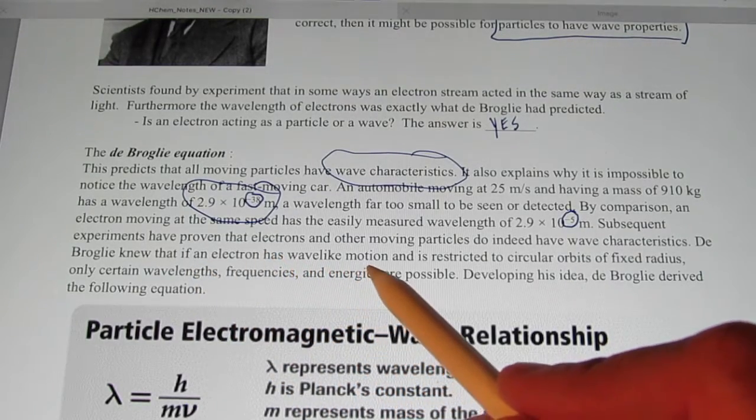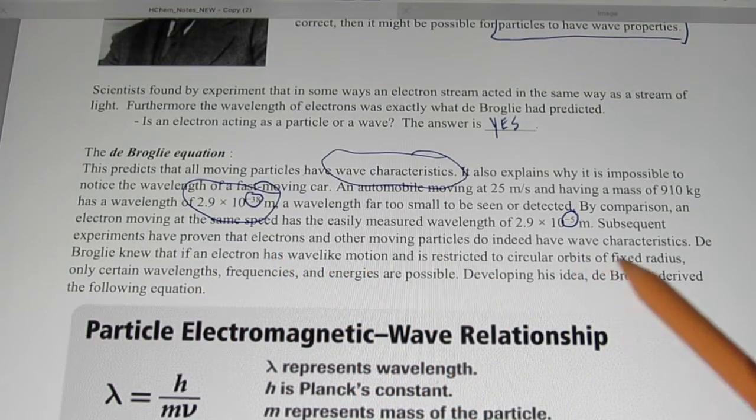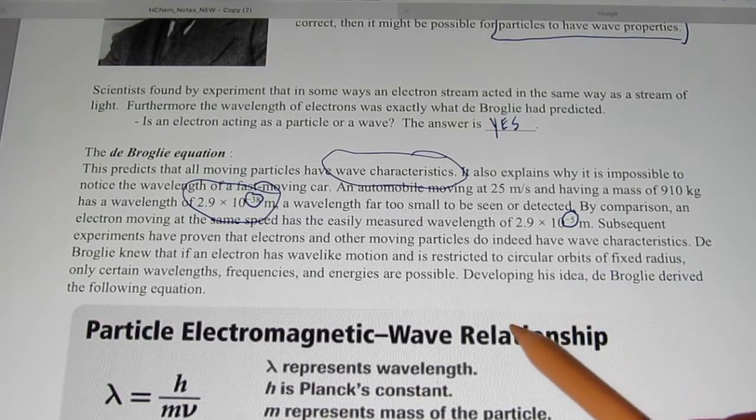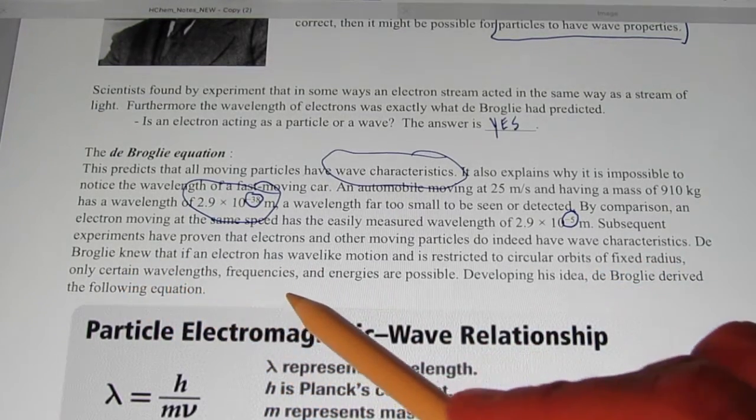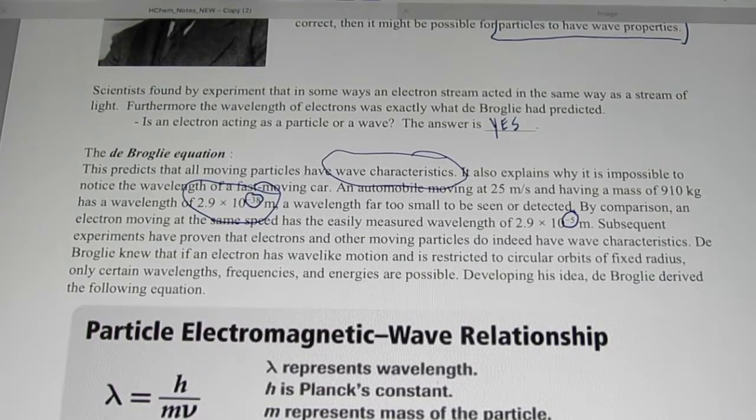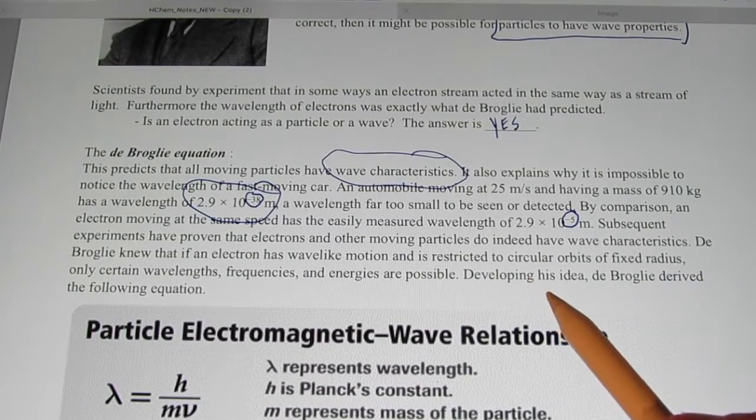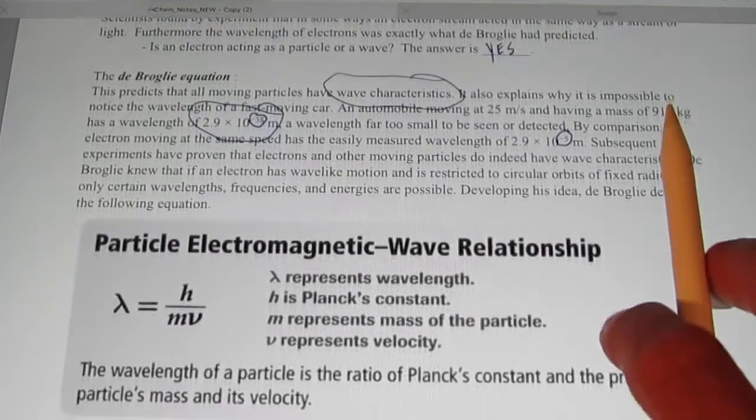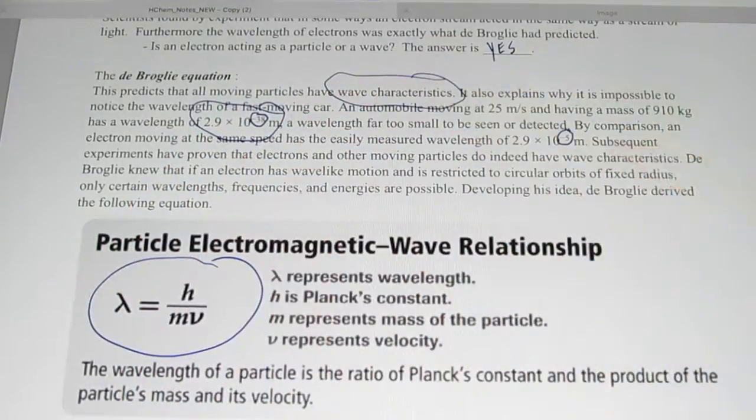De Broglie knew that if an electron has wave-like motion and is restricted to circular orbits of fixed radius, only certain wavelengths, frequencies, and energies are possible. Developing his idea, de Broglie derived the following equation, which we just went over a few moments ago.